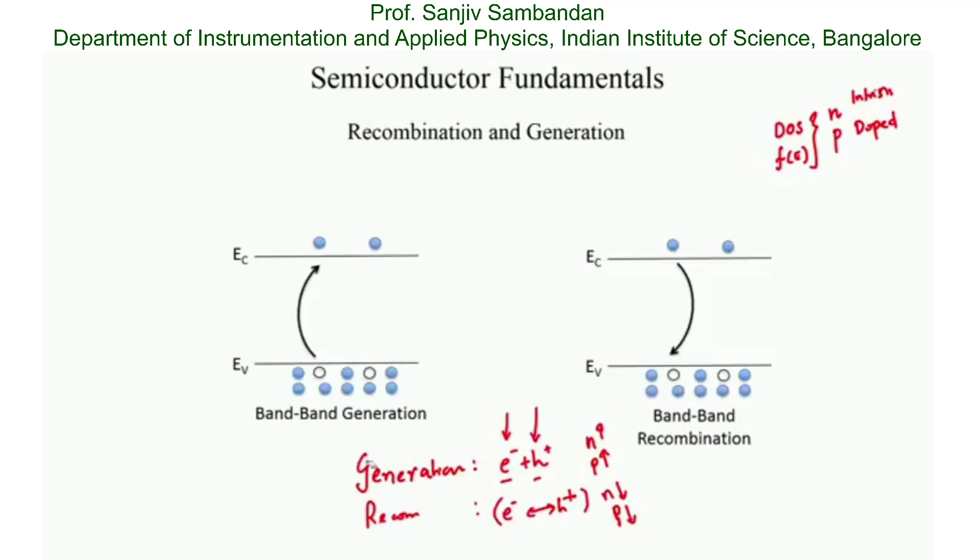Let us look at some of the basic mechanisms of carrier generation and recombination. The first is band-to-band generation and recombination. Band-to-band simply implies that you have your valence band with electrons here, represented by blue circles, and holes by hollow circles. These electrons are bound to the silicon atom and get some energy because of either thermal energy or perhaps a photon interacting with them. This electron is now excited and has enough energy to get into the conduction band. So that is band-to-band generation. You have created an electron in the conduction band and this electron has left behind a hole in the valence band.